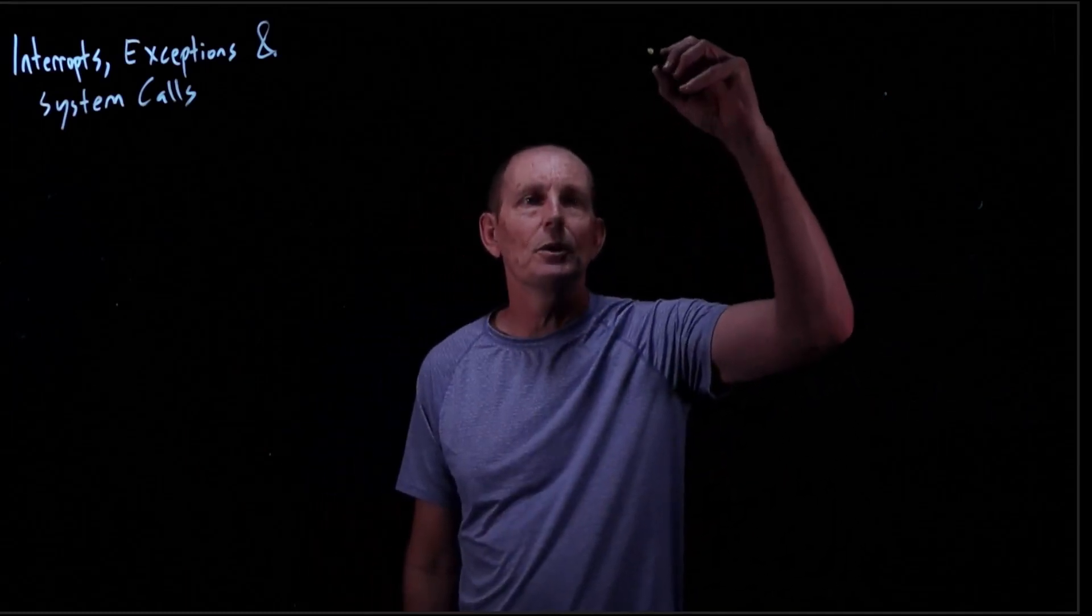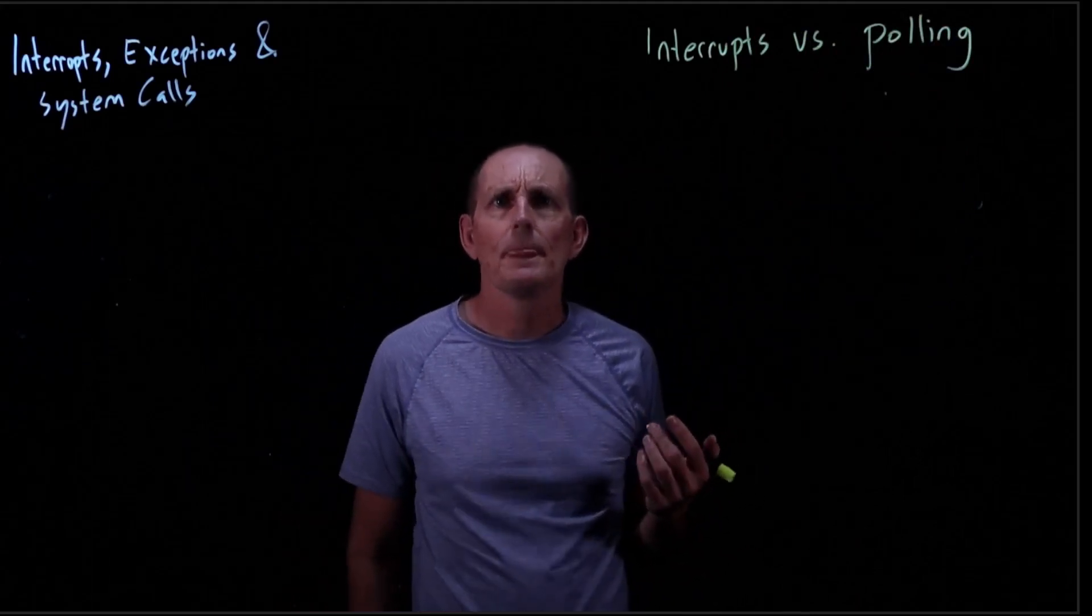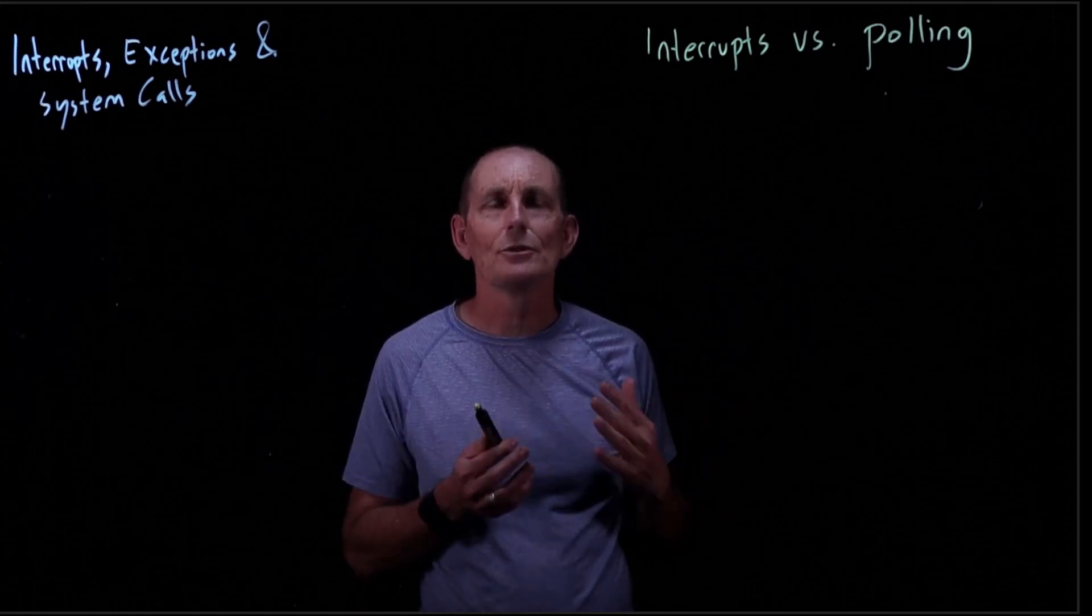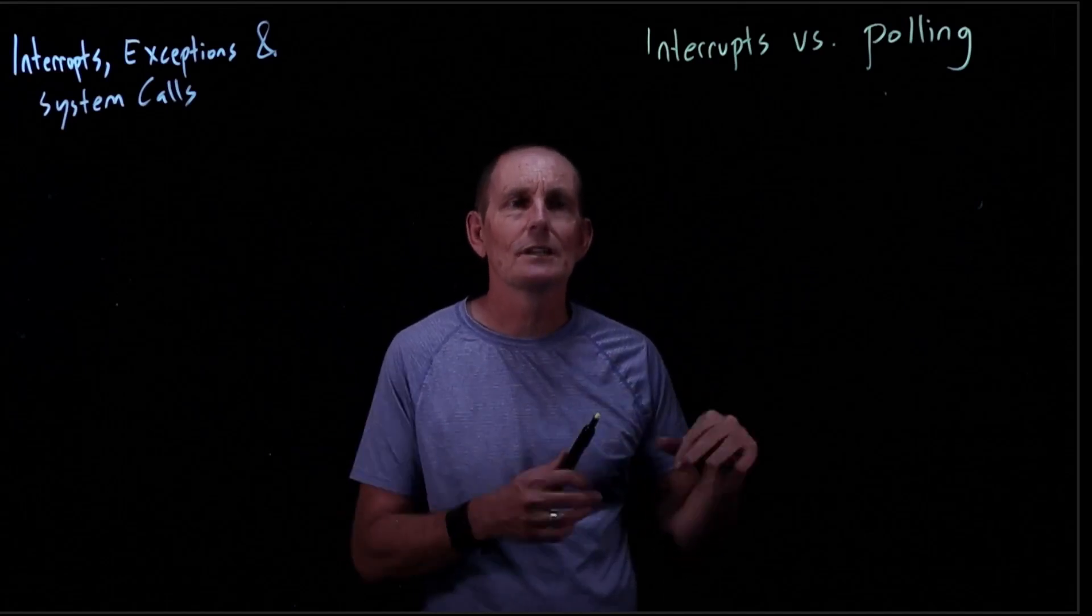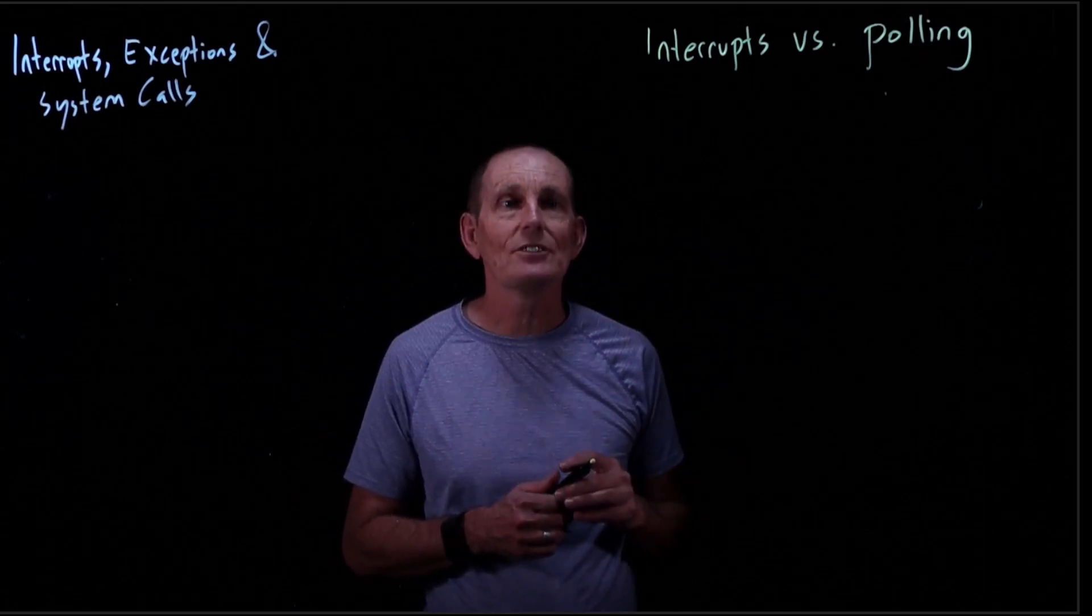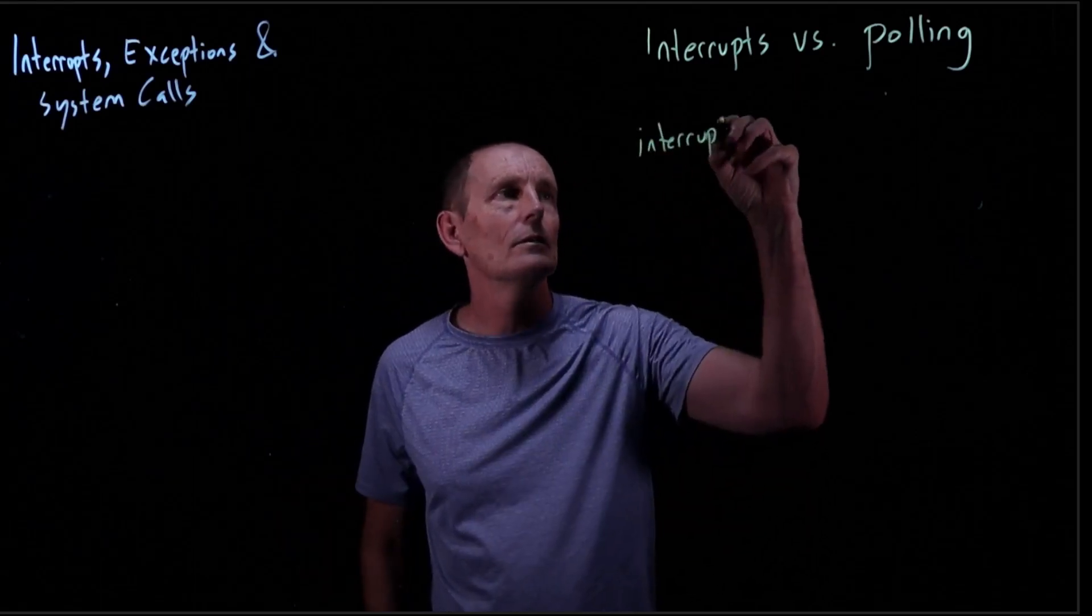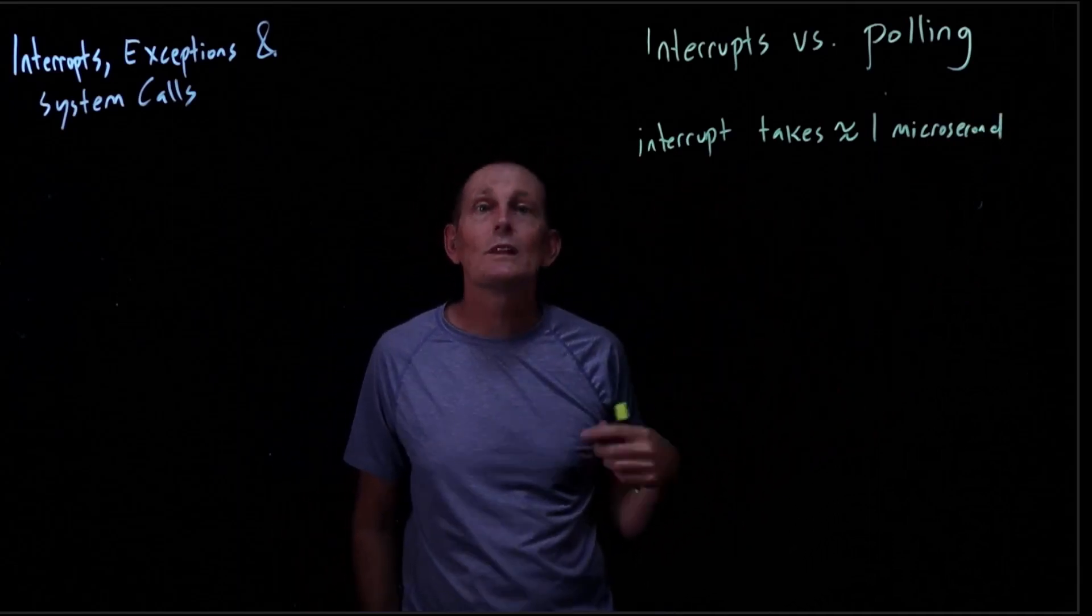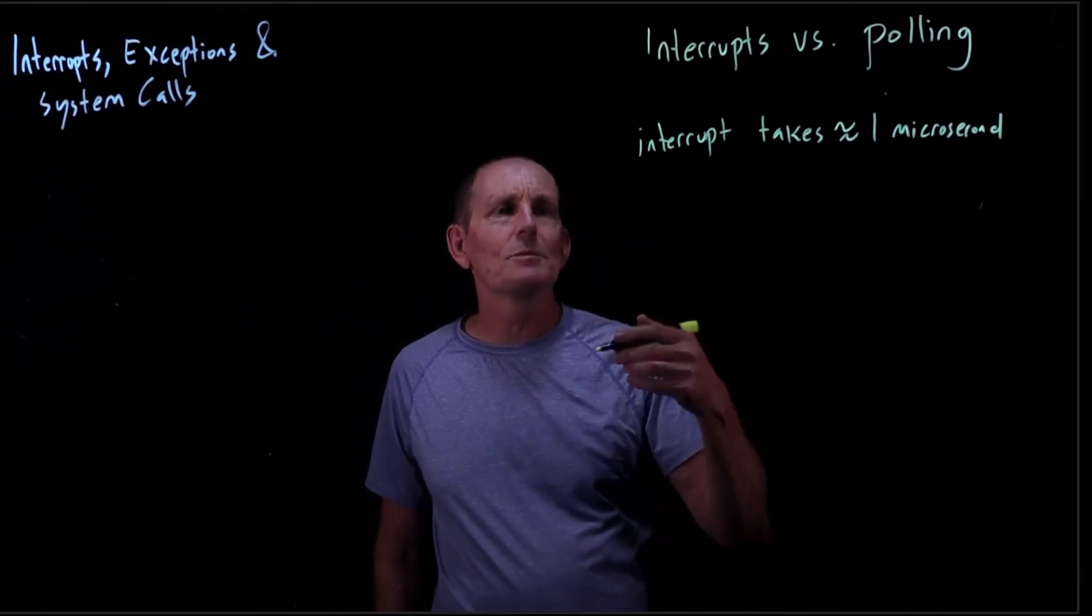Let's talk about interrupts versus polling. There's a cost to interrupt. They take on the order of a microsecond. We've got to save and restore state. We have a cache miss usually, so we have to go to main memory to get to the IDT and so on. Some devices can generate interrupts faster than one per microsecond, for example, Gigabit Ethernet. The interrupt overhead is one microsecond. What if you have interrupts coming in faster than that? You're going to get behind. You're going to lose information.